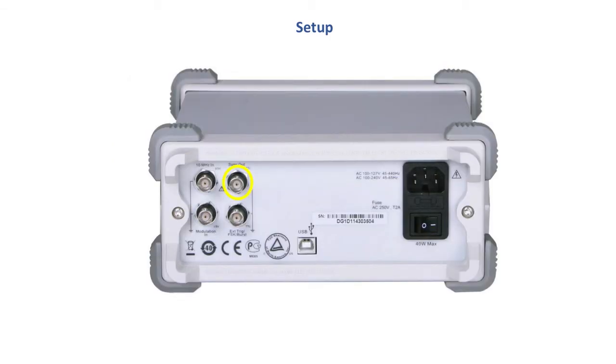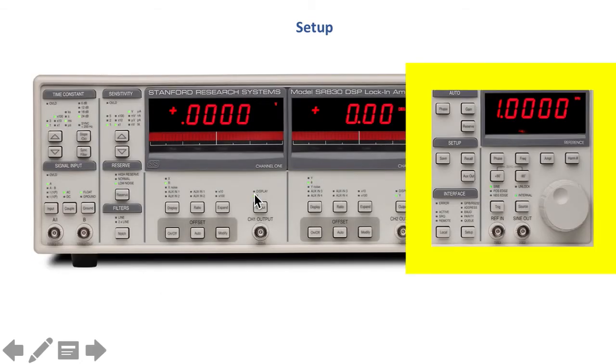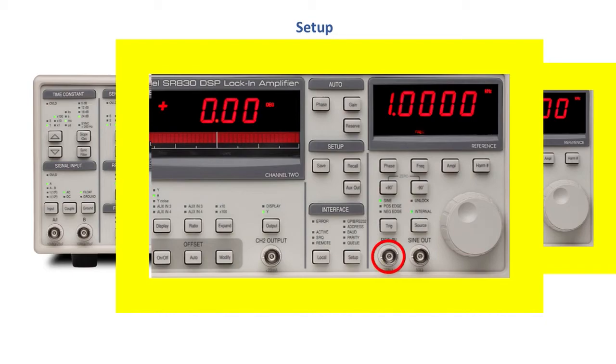Then we could go on to the back of the waveform generator and we could click and we could use the BNC connector on the sync out function right there. We connect that directly on this right side panel here to the ref in button. Then we click the source and we change it from internal, it's going to hit unlock and then those green lights will go off. Then we change the trig function to say positive edge.